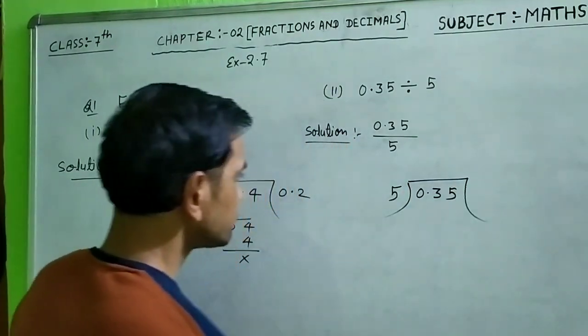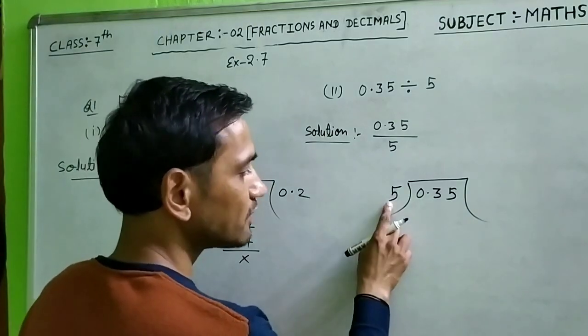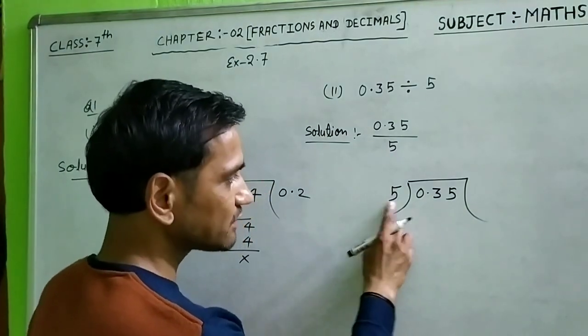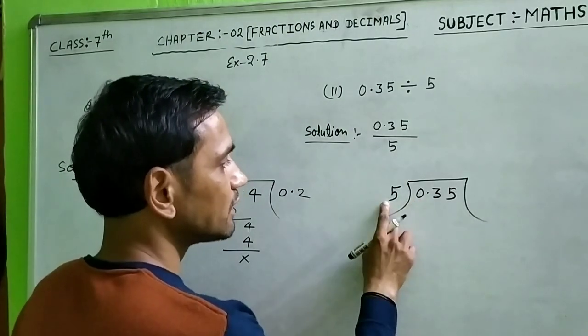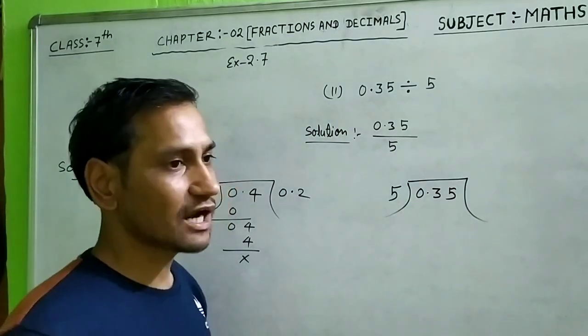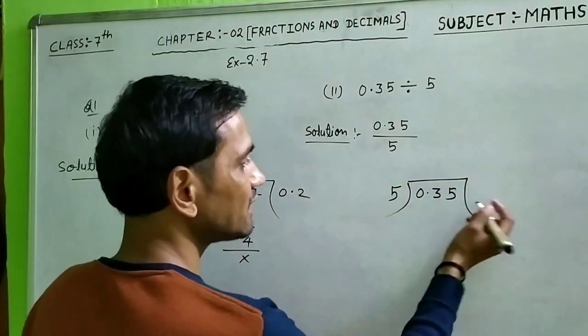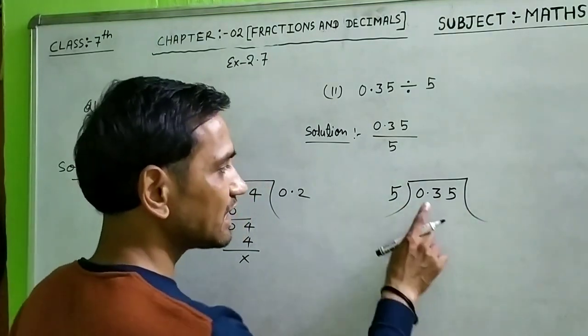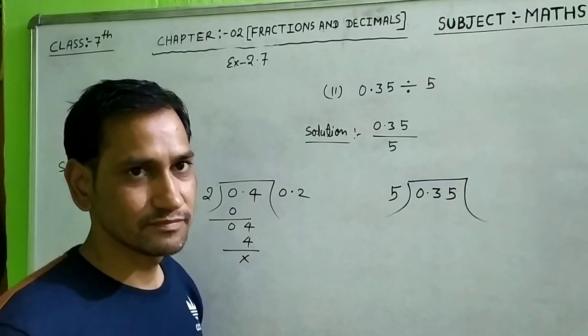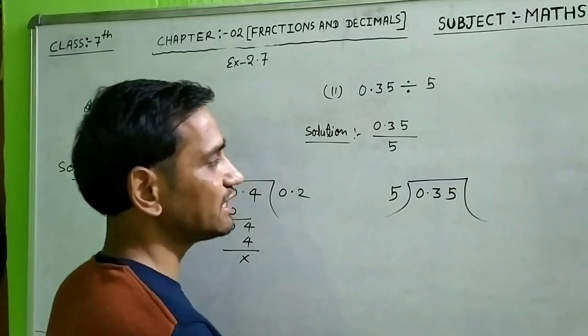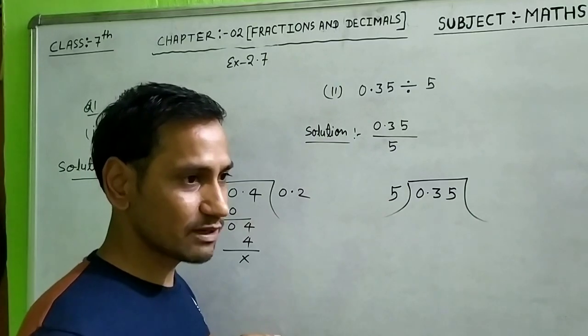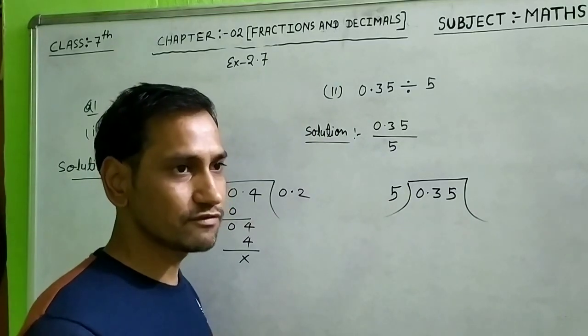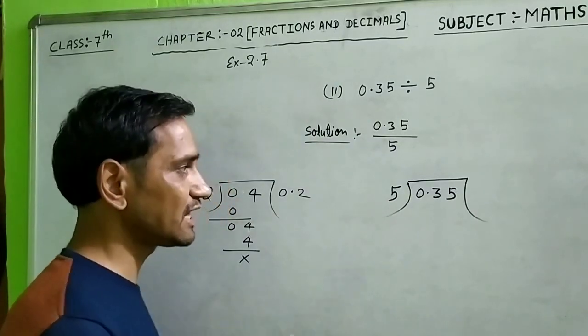Student, now you see here one digit. Divide: 5 goes into 0 zero times, multiply 5×0=0. Now 5 goes into 3—it doesn't go, so we continue.